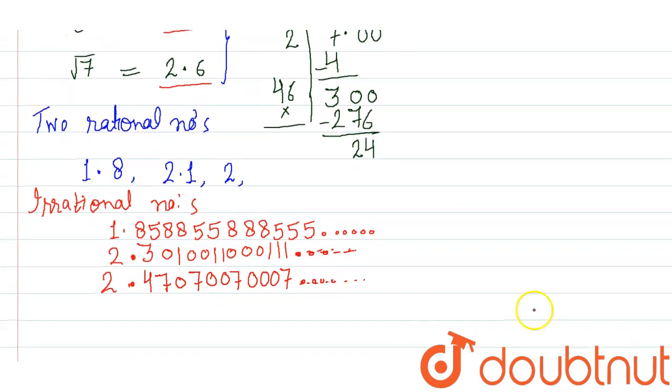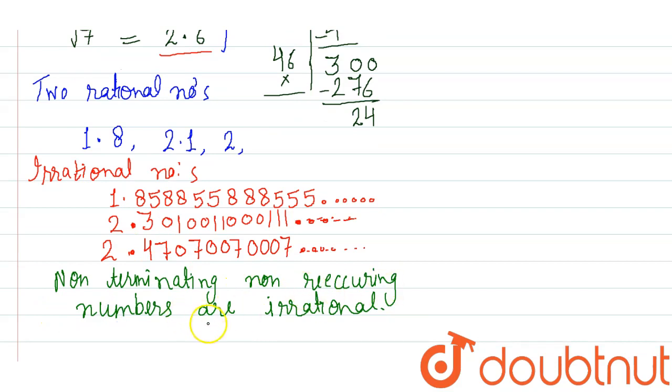By these dots, this number, this pattern will go on up to infinite, okay. Such type of non-terminating non-recurring numbers are irrational numbers.